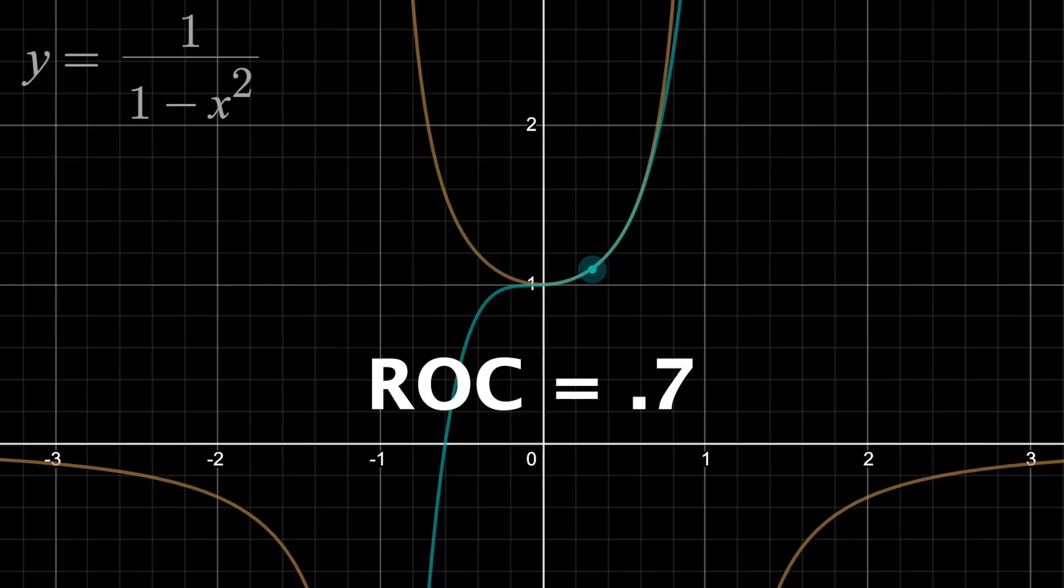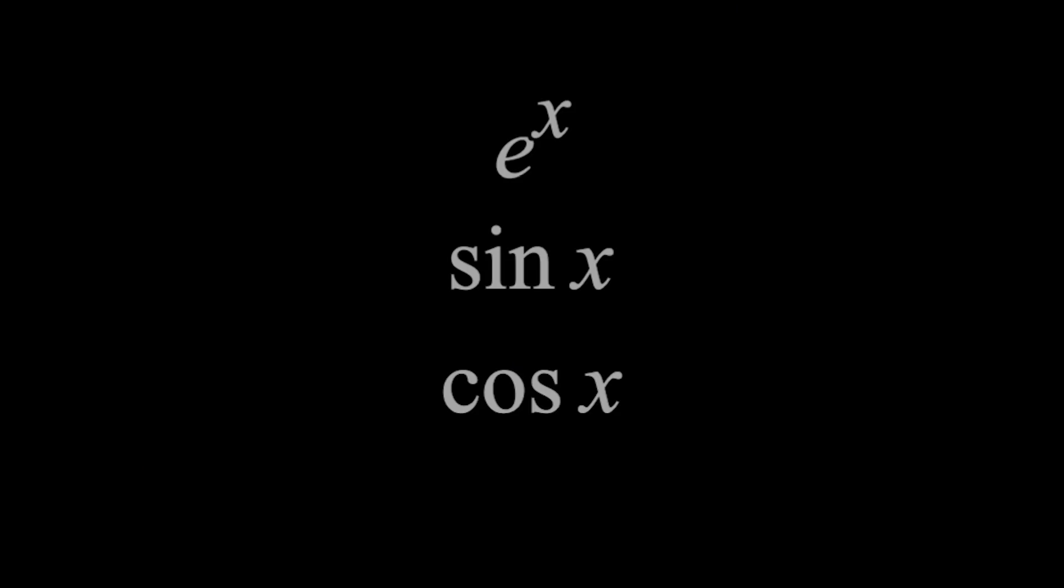Well, from what I've shown, there seems to be one promising answer. e to the x, cosine x, and sine x have no vertical asymptotes. There's no singularities where the function isn't defined. So the radius of convergence is infinity.